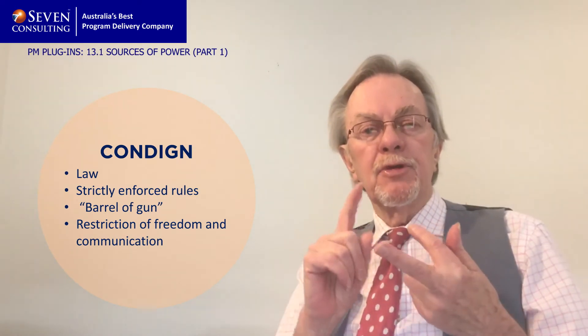The first is condign power. This is the power that comes out of the barrel of a gun — it comes out of strict, rigorous enforcement of law and regulation. It comes from the ability to actually stop people, to limit their freedom, for example. Most of you would associate it with authoritarian governments, dictatorships, etc. However, even in a democracy, some organisations — border force, the police, etc. — have elements of condign power. The bad news is PMs don't have access to that. Probably good news if you think about it.